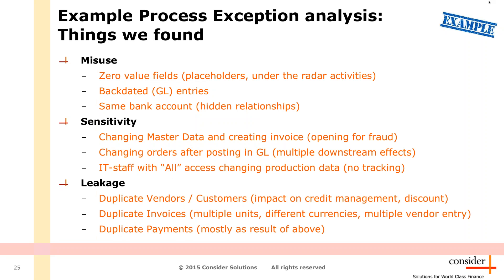What do we find typically when running process exception analysis? Very different things. I try to group them in the headers of misuse, sensitivity, and leakage. Sometimes they play a role in all three categories. But you find anything — from ignorance of how to use the system, until blatant fraud, and anything in between. And sometimes the effects of an exception are found downstream.